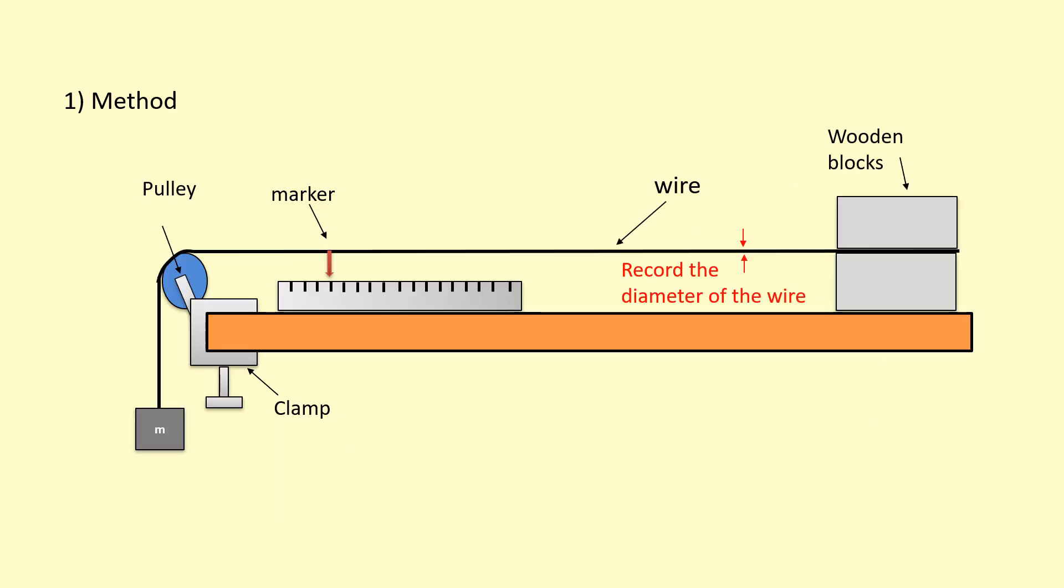Once you've done that, once you've got the diameter, you can measure the original length of the wire. That's from where the wooden block is closing the wire to the marker.